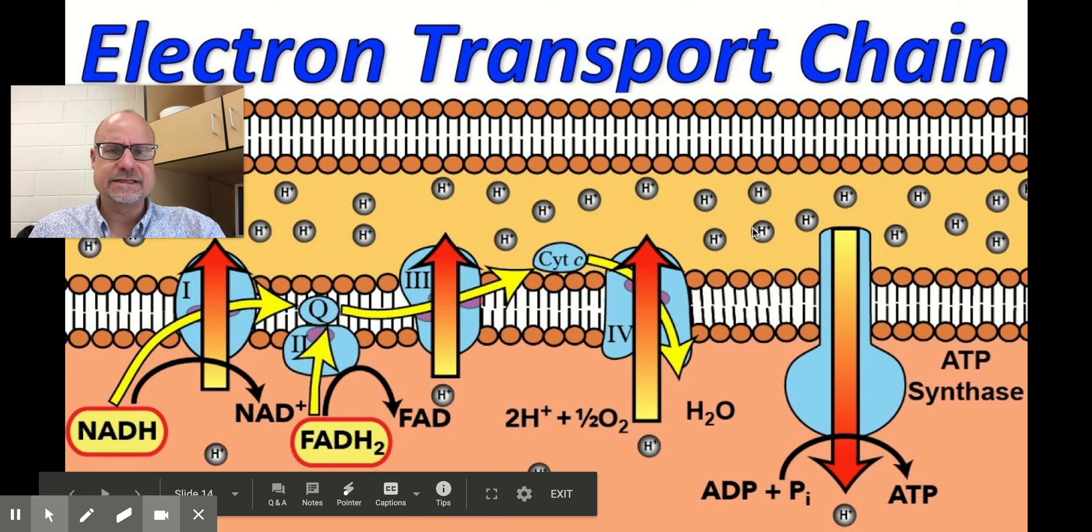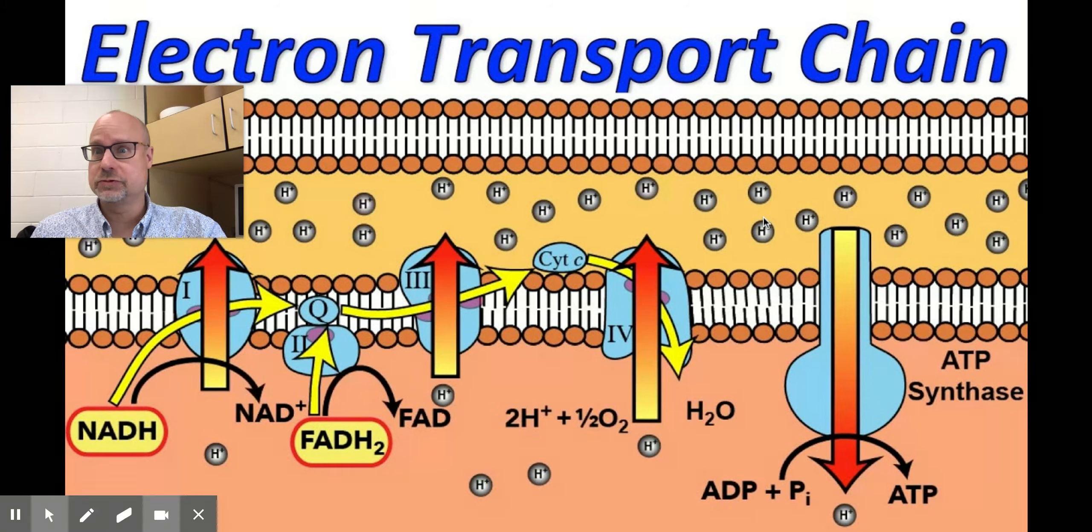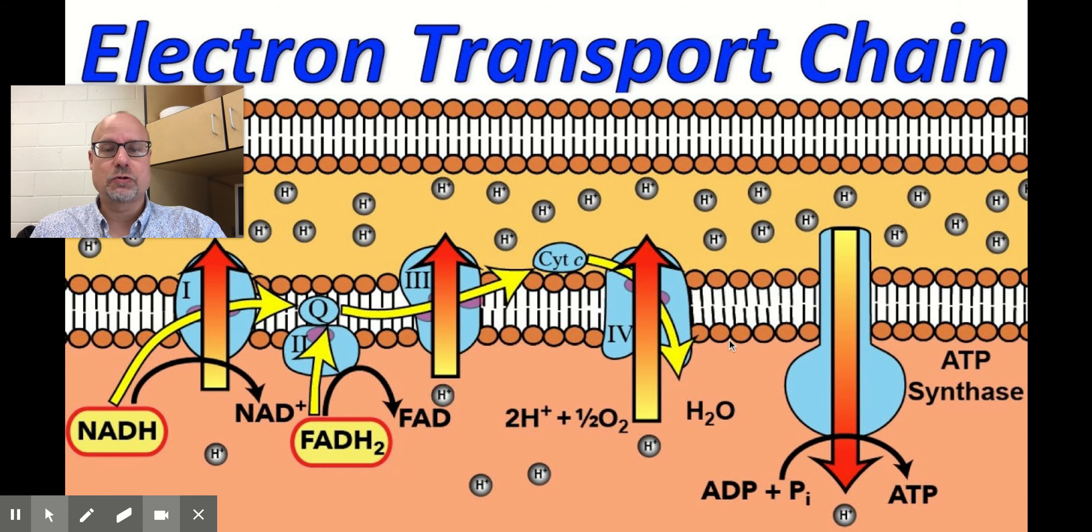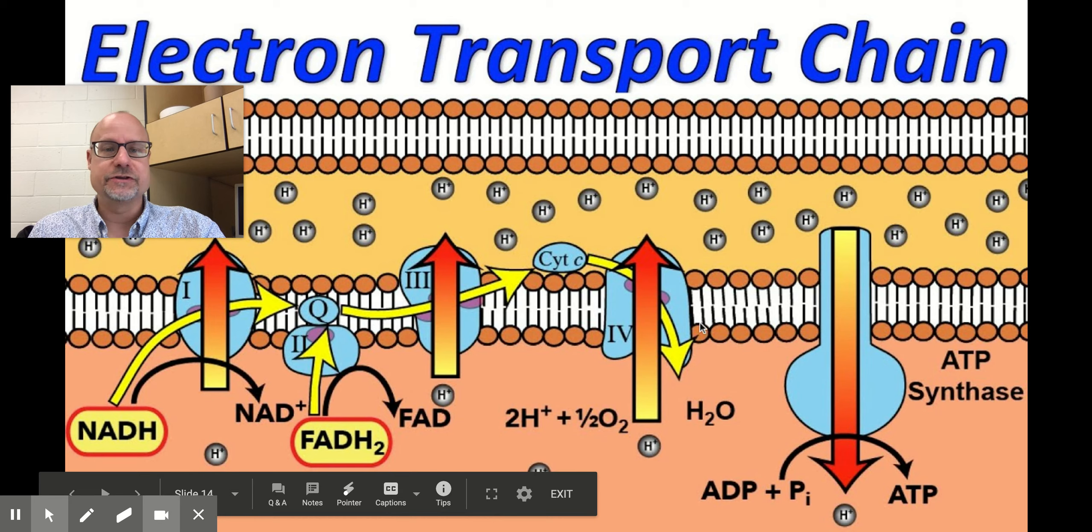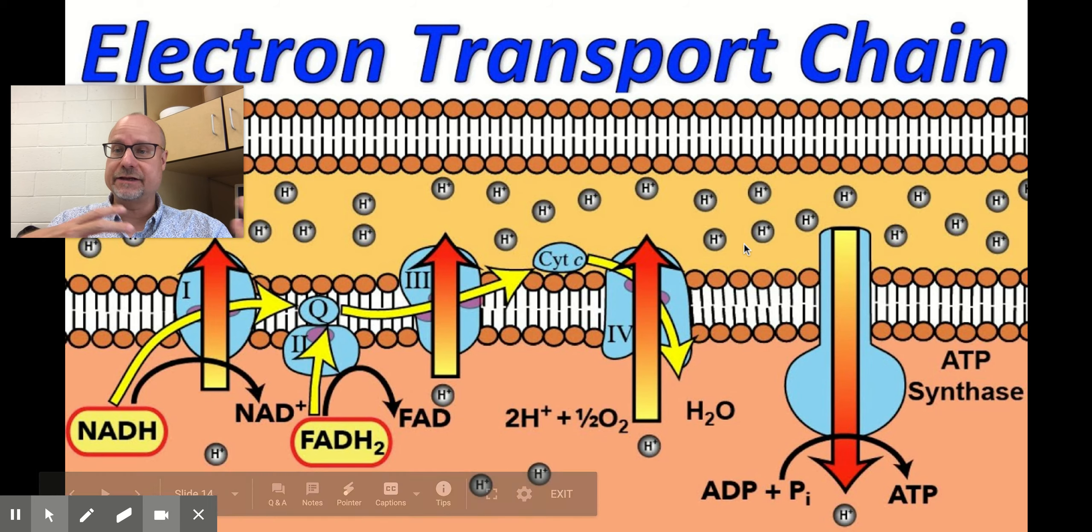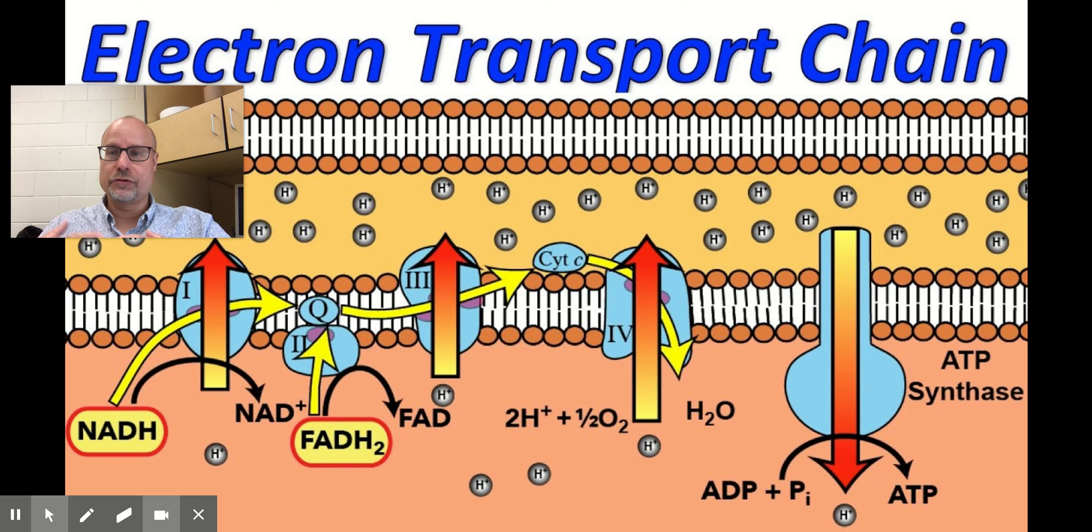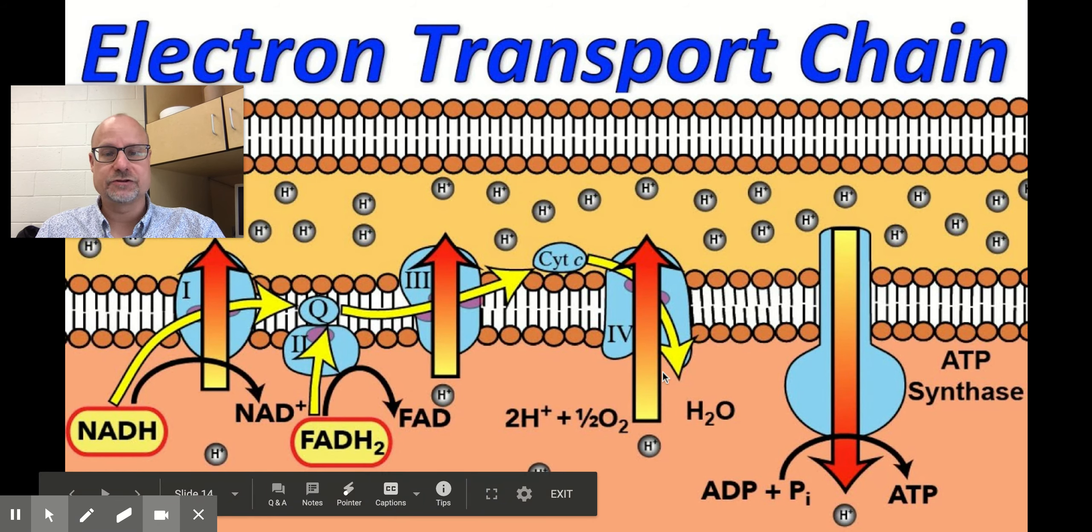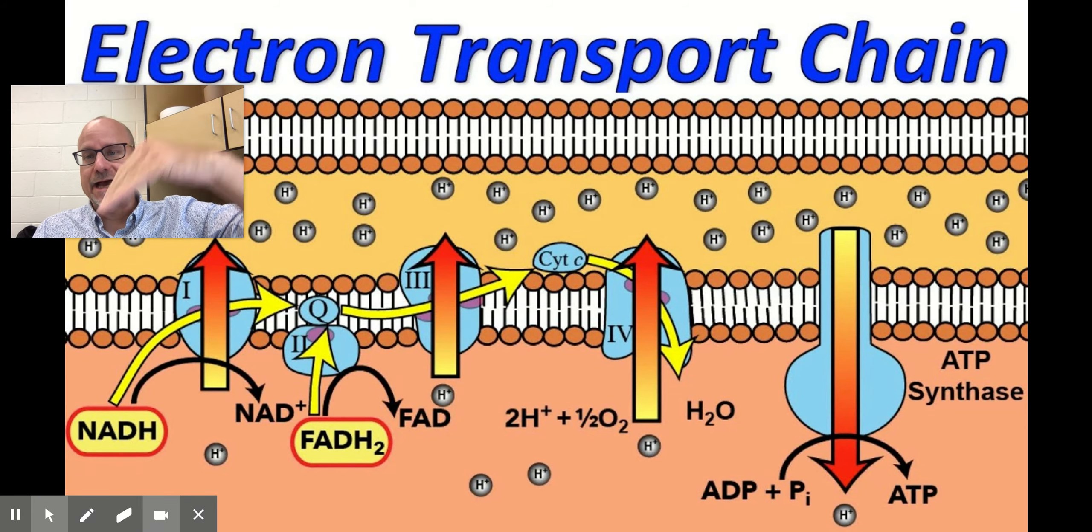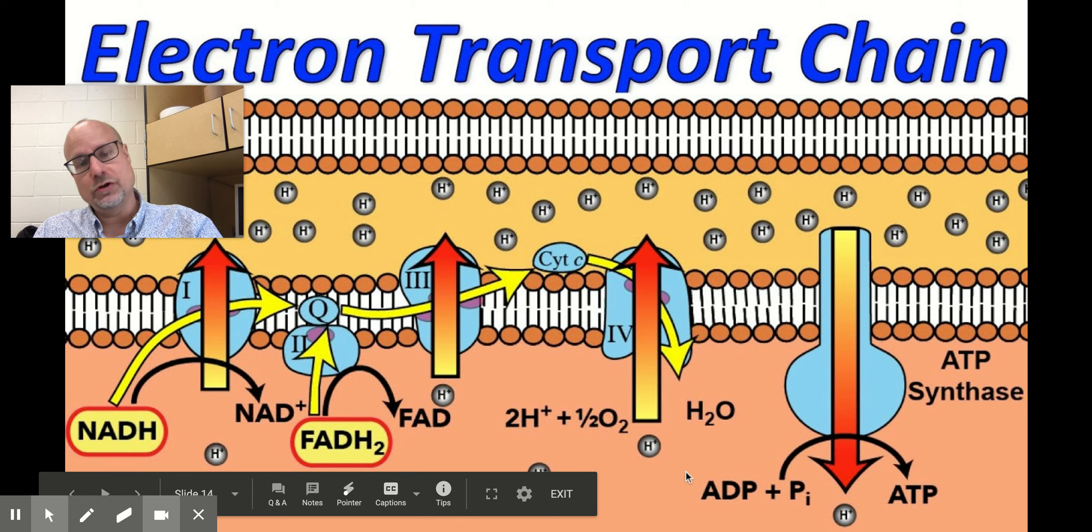Now, what that does is drives these hydrogen ions through natural diffusion to want to cross this membrane. Remember, in a gradient from high to low, it costs no energy for whatever's being moved to go from high to low concentration. So it doesn't cost energy for the hydrogen ion to cross this way because it's going down the gradient. When you send something up the gradient from low to high concentration, that takes energy.